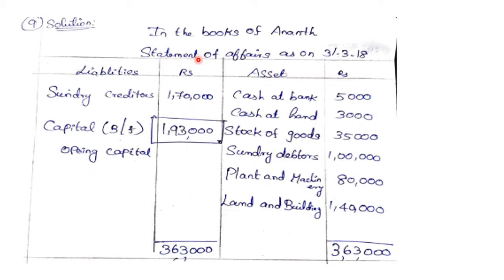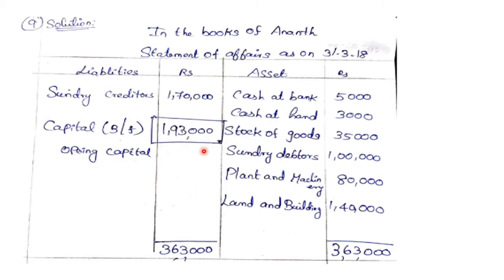In the books of Anand, the Statement of Affairs as on 31.3.18: on the liabilities side, sundry creditors is 1,70,000. On the assets side, cash at bank 5,000; cash in hand 3,000; stock of goods 35,000; sundry debtors 1,00,000; plant and machinery 80,000; land and building 1,40,000. Total assets amount to 3,63,000. Therefore, opening capital = 3,63,000 minus 1,70,000 = 1,93,000.